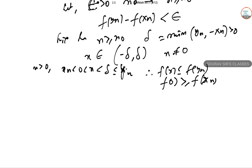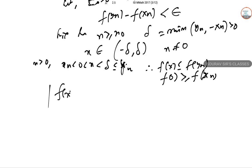Taking the modulus difference between these two, |f(x) - f(0)| = f(x) - f(0) ≤ f(yn₀) - f(xn₀) < ε.